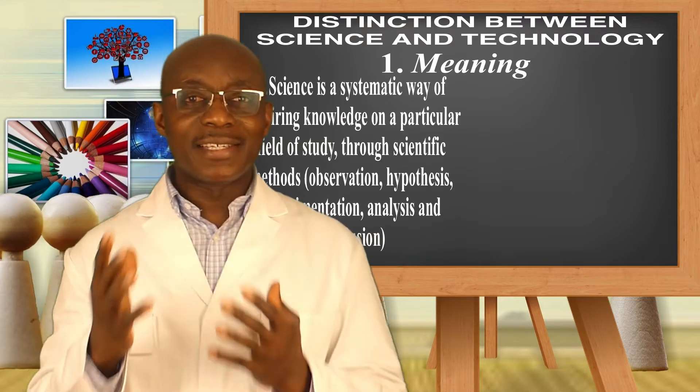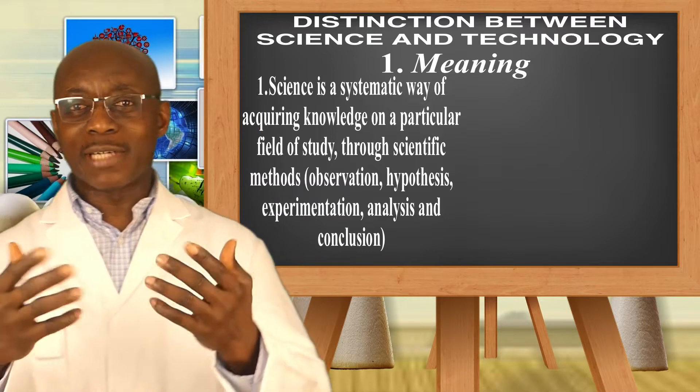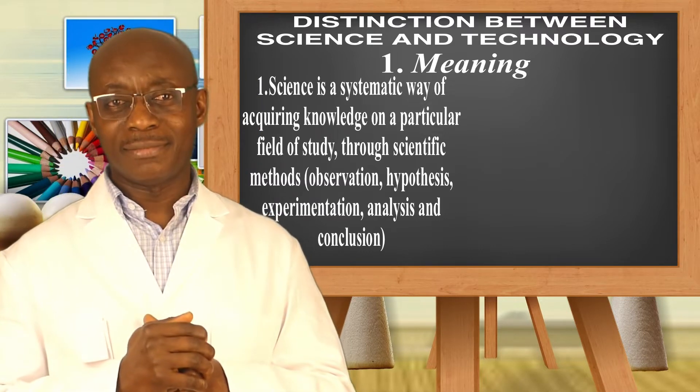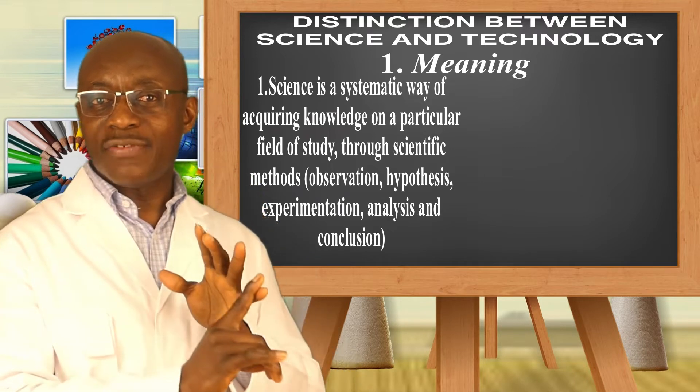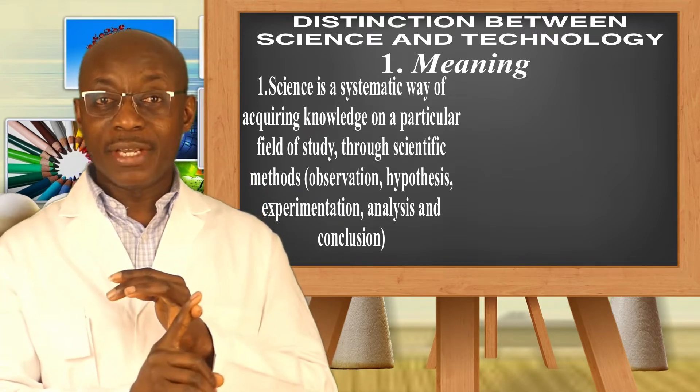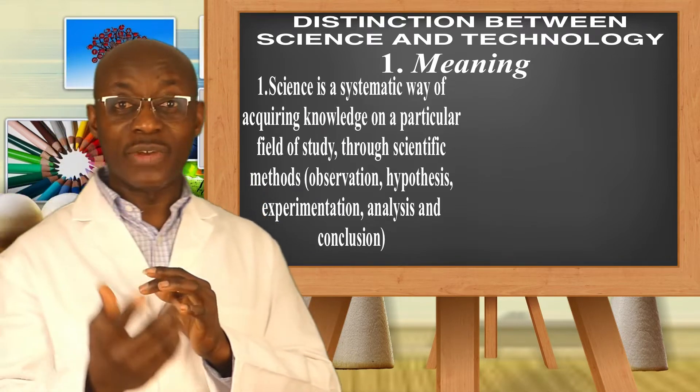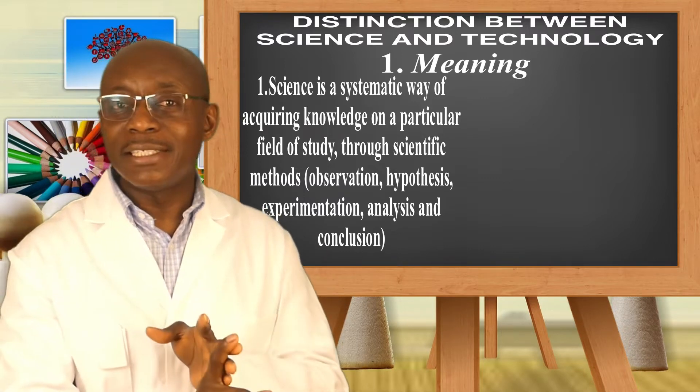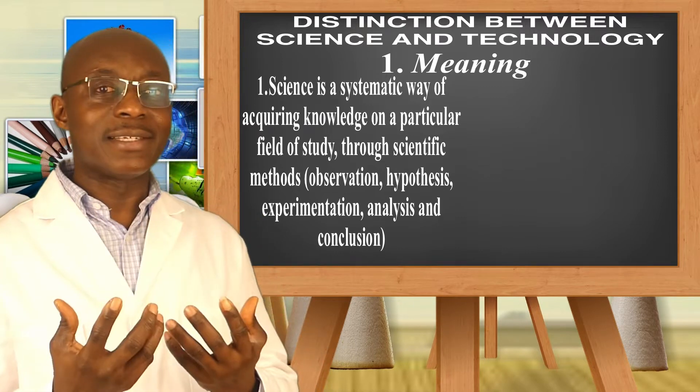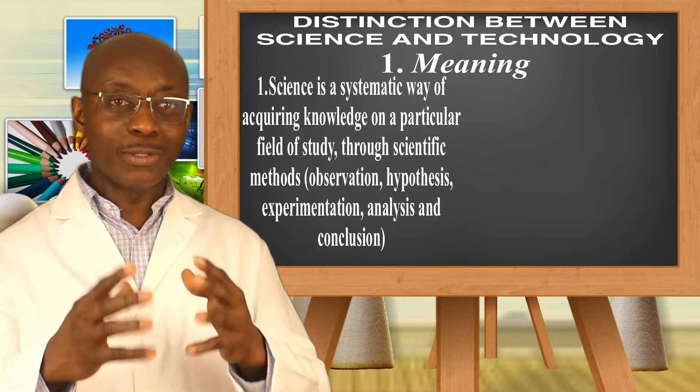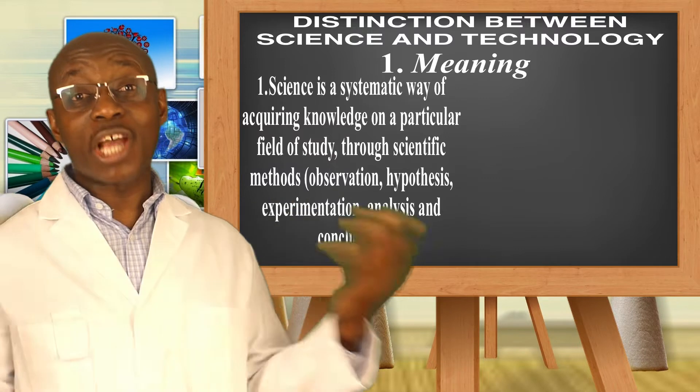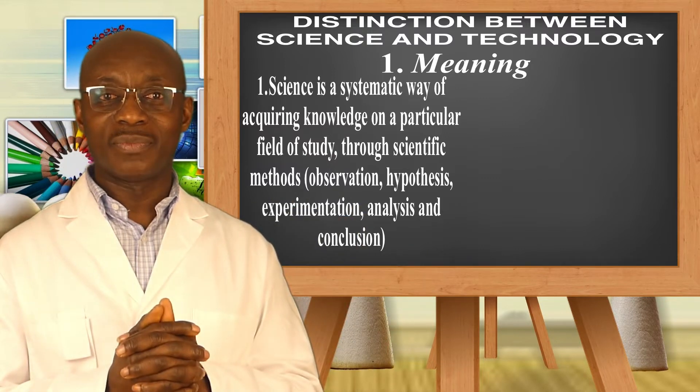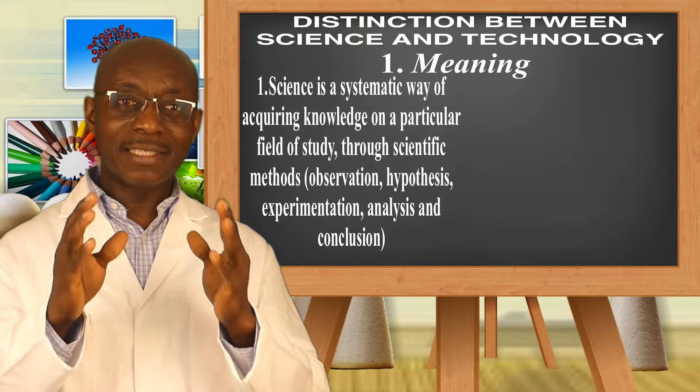When we say science, science is a systematic way of acquiring knowledge on a particular field of study through scientific methods. I mean, scientists go through observation, they go through hypothesis, experimentation, they do analysis, and then they come into conclusion, and then share what they have learned so far. That is science. That is the meaning of science.